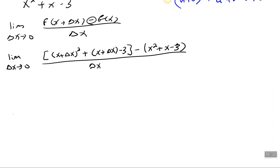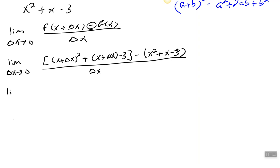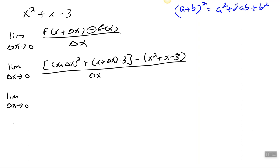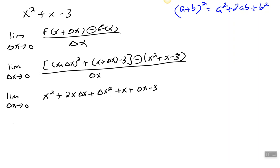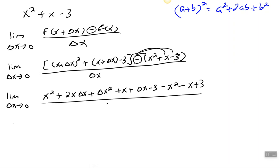From here it's just algebra. Using the (a + b)² rule: the first term squared plus two times the terms plus the last term squared, plus x plus delta x, plus delta x from the second parentheses, minus 3. Now I need to distribute that minus, all over delta x.